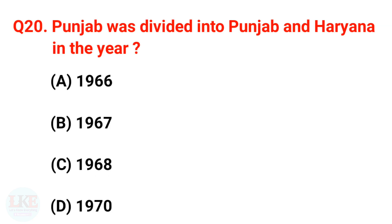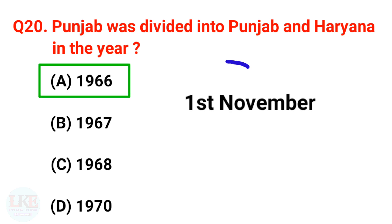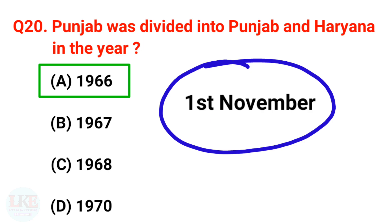Question number 20: Punjab was divided into Punjab and Haryana in the year 1966, on 1st November.